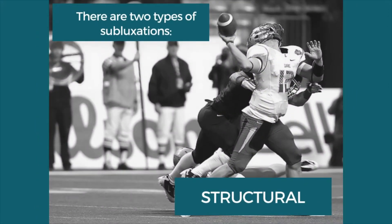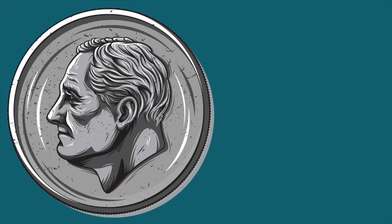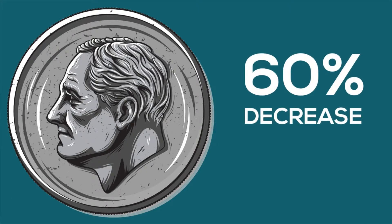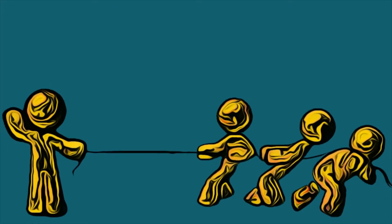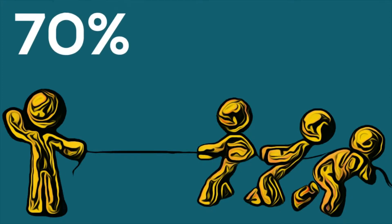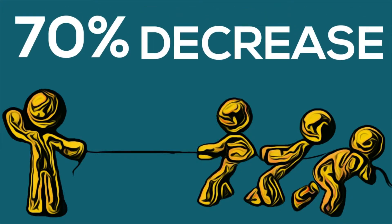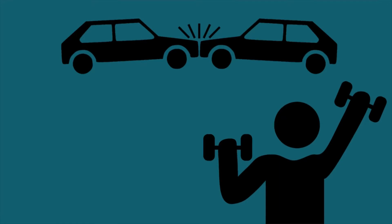There are two types of subluxations. The first type is called the structural type. When a vertebra is misaligned, the distortion can either compress or pinch a nerve, or stretch and pull the nerve. Studies show that the weight of a dime is all the pressure it takes to decrease the function of a nerve by 60%. Studies also revealed that a 6% stretch on the nerve causes a 70% decrease in its function. It doesn't take much pressure or pulling on the nerve to severely interfere with its function. These subluxations are usually caused by physical stress or trauma.